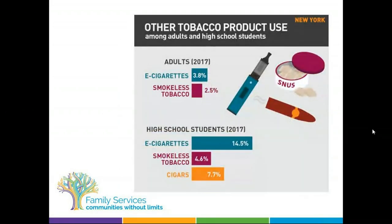High school students use other tobacco products at rates higher than adults. Almost four times as many high school students vaped in New York as adults in 2017. About 2.5% of adults reported using smokeless tobacco or chew, while 4.6% of high school students reported using smokeless tobacco. A whopping 7.7% of high school students reported smoking cigars — this may have something to do with available flavors of cigars and cigarillos, and using cigars to roll marijuana blunts.